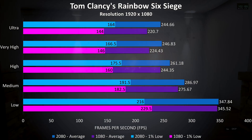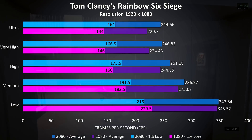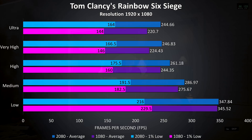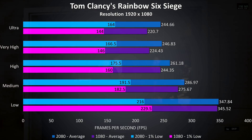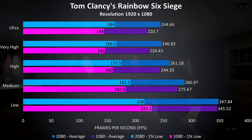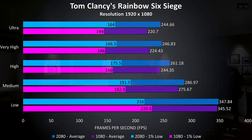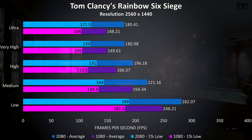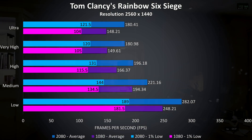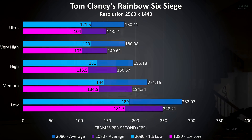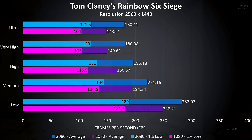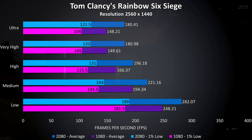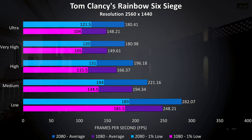Rainbow Six Siege was another game tested with the built-in benchmark. At 1080p there was an 11% improvement to the average frame rate with the 2080 at ultra settings, and a slightly higher 14% improvement to the 1% low. At 1440p the 2080 was now giving us average frame rates 22% faster than the 1080 at ultra settings, and a 17% higher 1% low, though being realistic either of these options are still providing crazy high results.